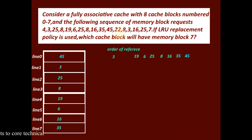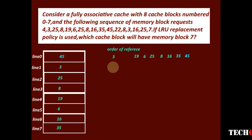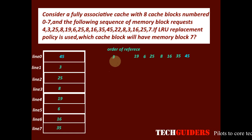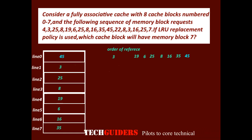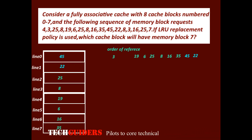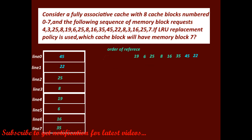After block 45, there is a request for block 22. There are no more free lines in the cache. The least recently used block is memory block 3, so we replace block 3 with block 22. Memory block 3 is no longer in the cache.